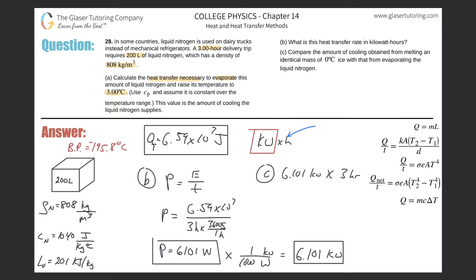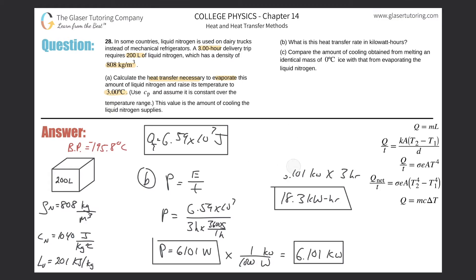Multiplying 6.101 kilowatts by 3 hours gives us approximately 18.3 kilowatt-hours. That is the answer for part b.